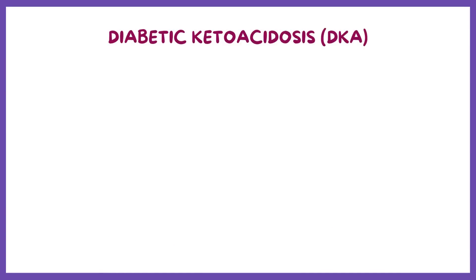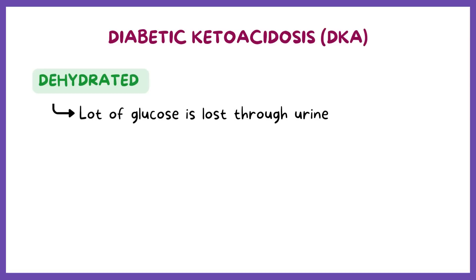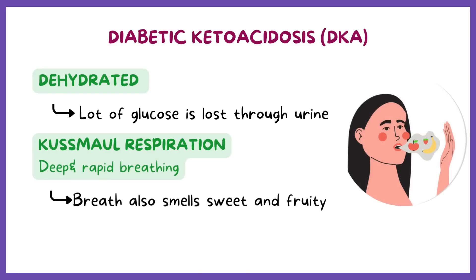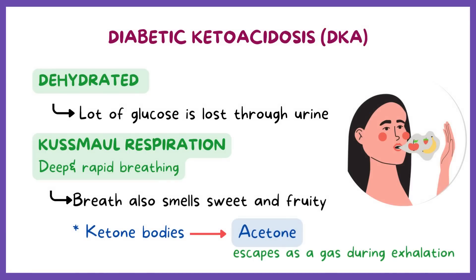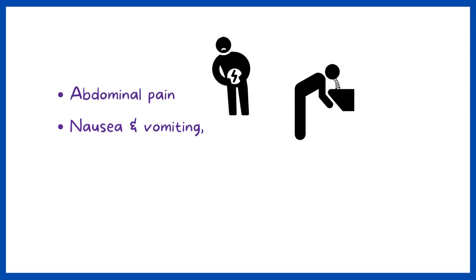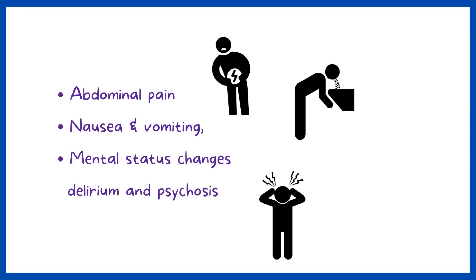Clinically, individuals with DKA are dehydrated because a lot of glucose is lost through urine, and they can develop Kussmaul respiration, which is a deep and rapid breathing. Their breath also smells sweet and fruity because ketone bodies break down into acetone, which escapes as a gas during exhalation. Abdominal pain, nausea, vomiting, and in severe DKA, mental status changes like delirium and psychosis can occur.